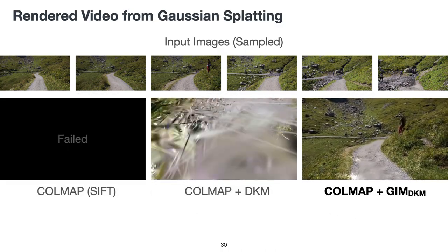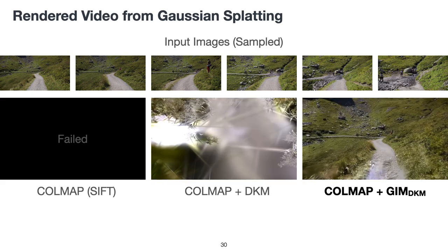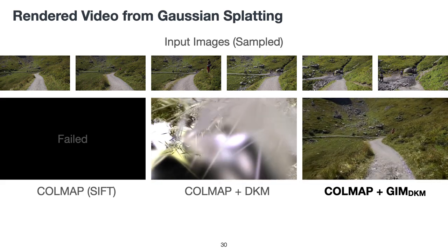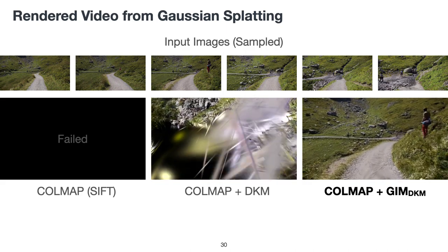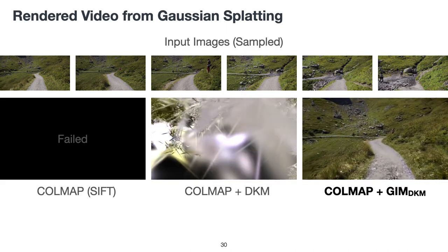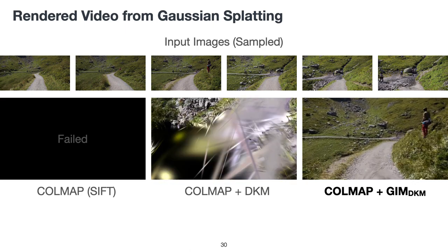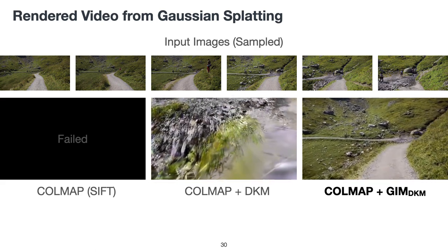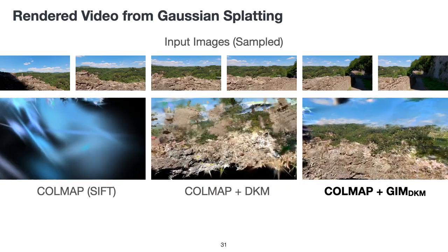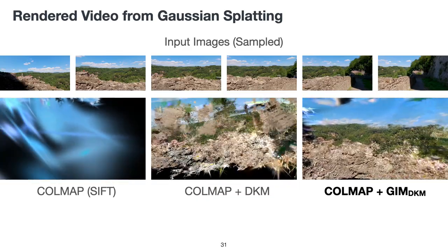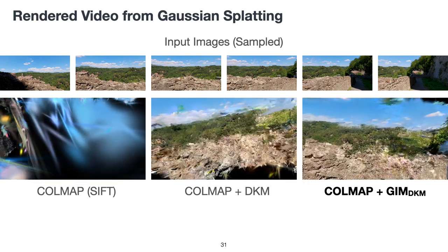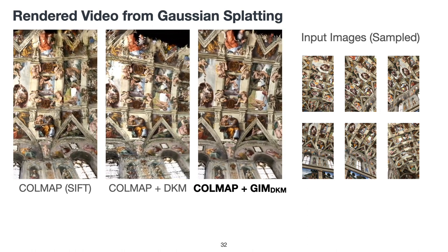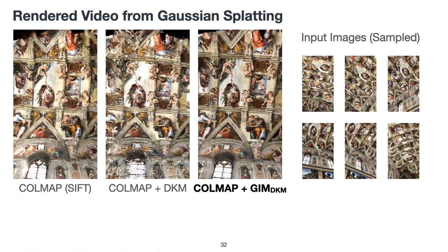Here is another example where GIM produced denser 3D reconstruction with more reliable geometry. Many neural rendering methods like Gaussian splatting use the output of COMAP as input. Using GIM to improve the robustness of COMAP, we can also improve the neural rendering quality on challenging data. In this example, both SIFT and DKM-based COMAP cannot recover reliable camera poses and 3D scene structures, resulting in either catastrophic failures or severely contaminated renderings. Here is another example where DKM and SIFT cannot provide sufficient initialization for Gaussian splatting. In the case where all methods can reconstruct the scene, the lower noise level of GIM also translates to sharper and cleaner renderings.